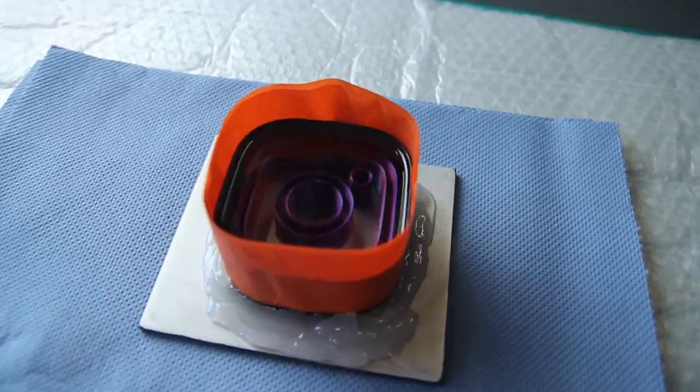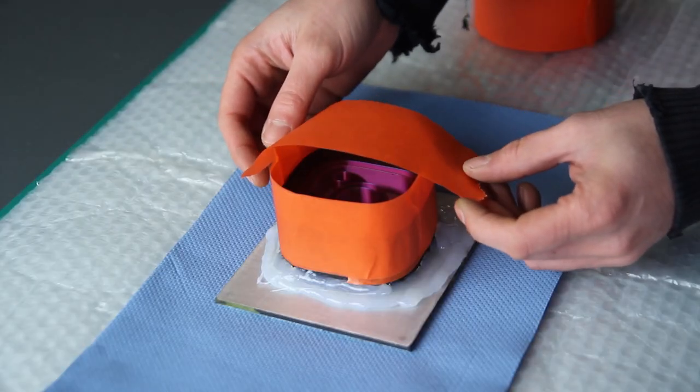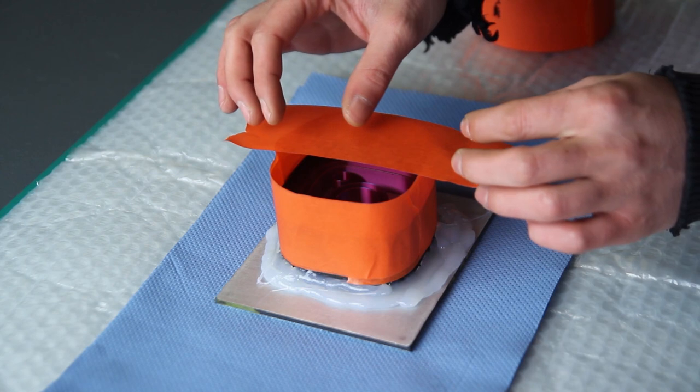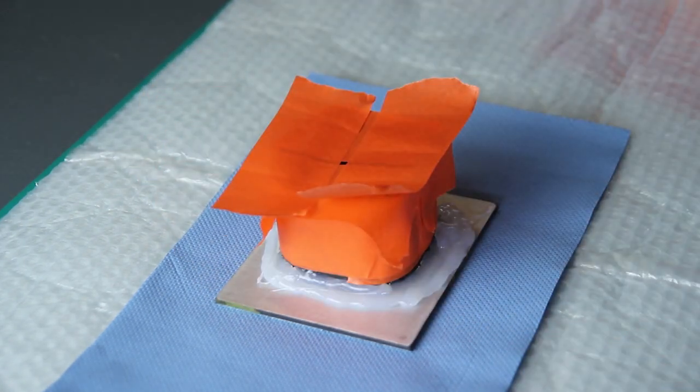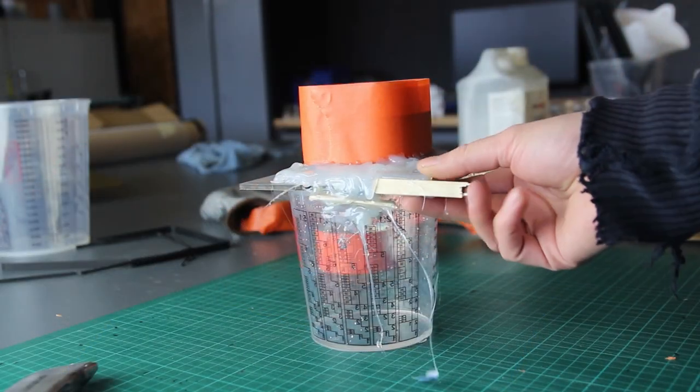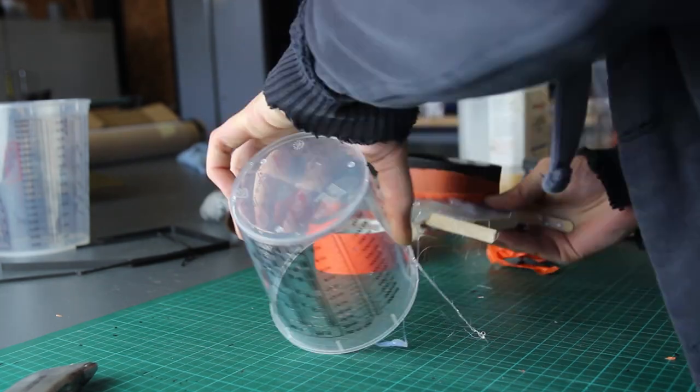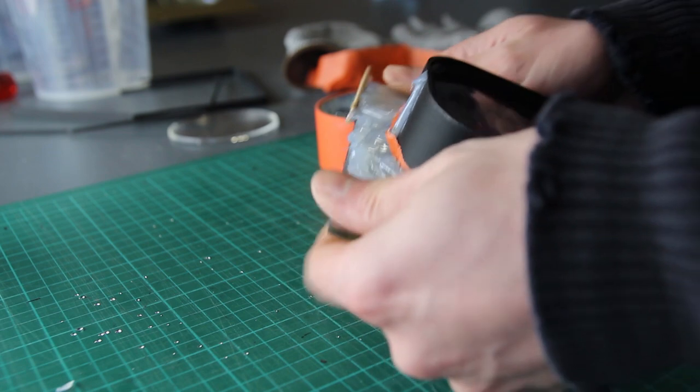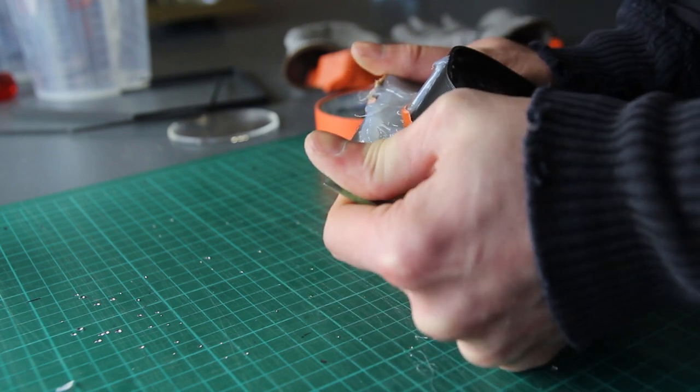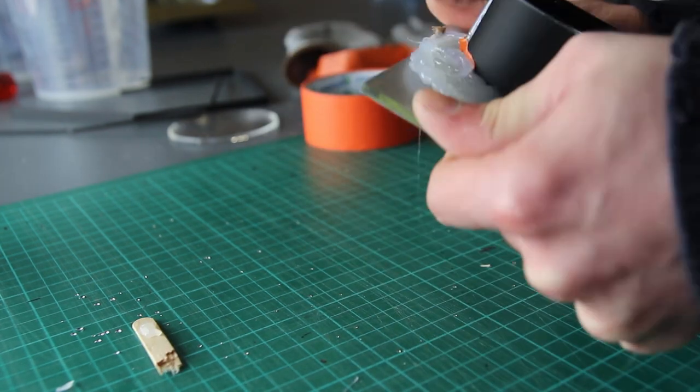You could also use a pressure pot - that will probably be for a future video. I now have a pressure pot. The difference between vacuum and pressure is that vacuum removes the air and gets the bubbles to the top, while pressure compresses all the air bubbles into tiny little bubbles that you won't be able to see.